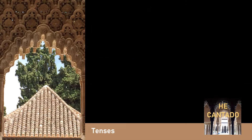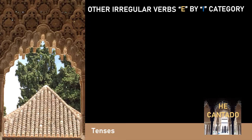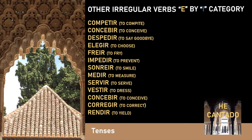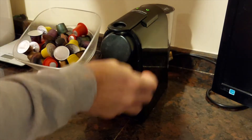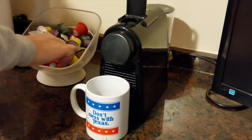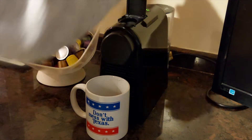And this is the list of irregular verbs that follow the same pattern as pedir. Now let's see an example of a conjugation for the verb elegir, which is a case of the E being replaced by an I. For example: elijo la cápsula de café y la meto en la cafetera.